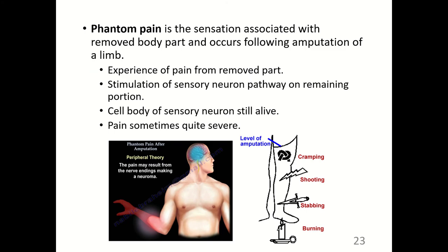Phantom pain is a sensation associated with a removed body part and occurs following amputation of a limb. The patient will experience pain from the removed part because the cell body of the sensory neuron is still alive and the remaining sensory neuron pathway is stimulated. The pain level can be quite severe — burning, stabbing, shooting, and cramping.